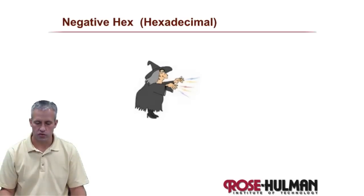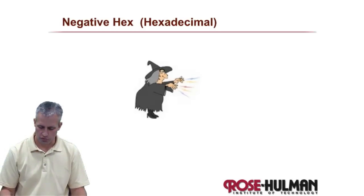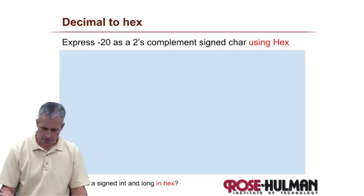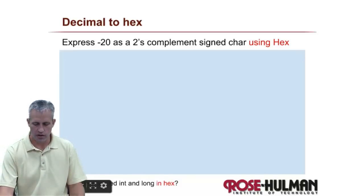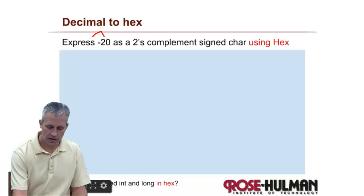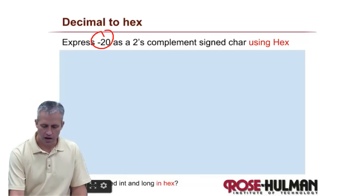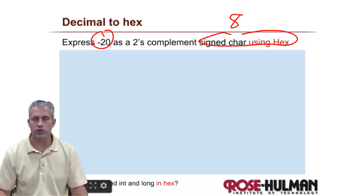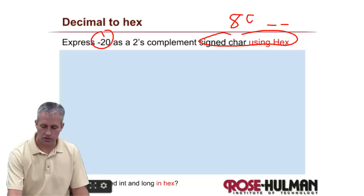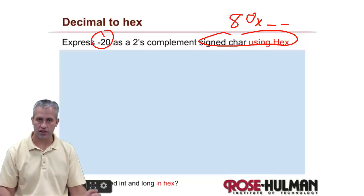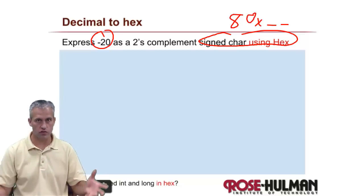So, negative hex — this one will be fairly straightforward, a little joke there. So if you are asked to express negative 20 as an unsigned char — that just means 8 bits — using hex, how would you do it? First, if you want 8 bits with hex, that's going to be two characters. So I know the answer is going to be something like 0x and then two characters.